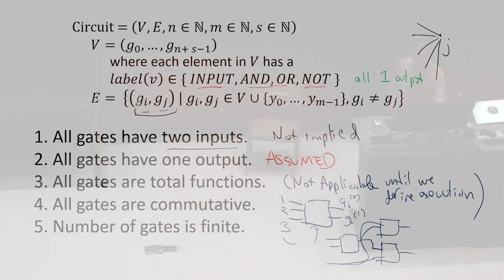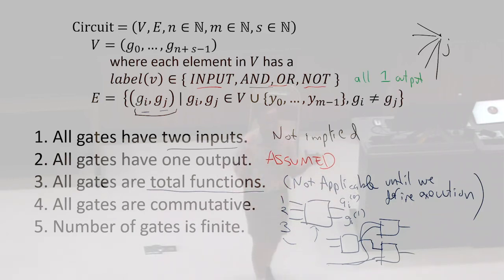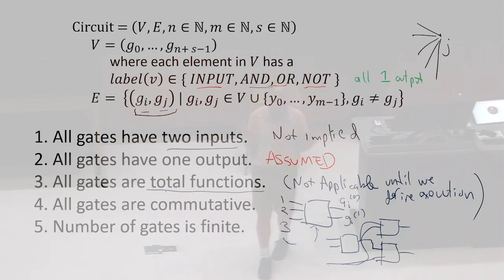The assumption about total functions — without a computing model, what the actual gates do is going to be important when we talk about how to execute. The way we're representing it, we haven't committed to that. We could say gates will have undefined behavior or the circuit blows up if the inputs are wrong. We haven't said anything about how execution happens, so we're not implying anything about what the gates do other than how they're connected.